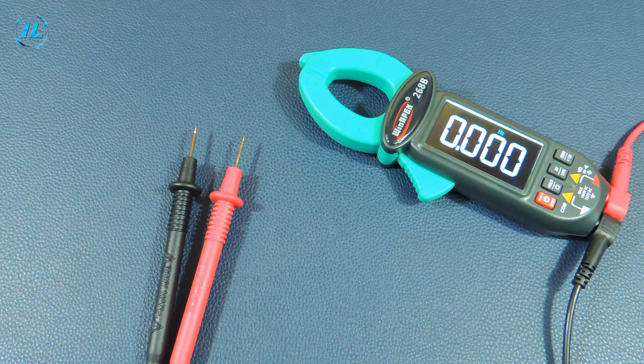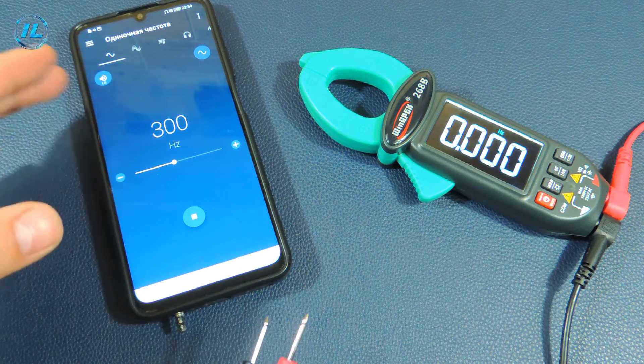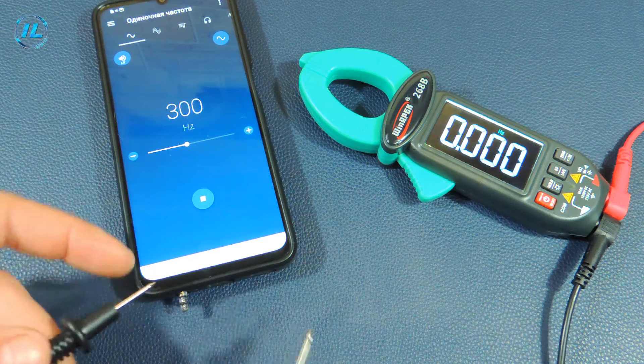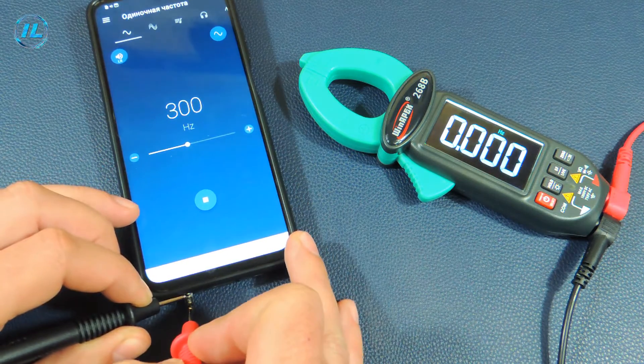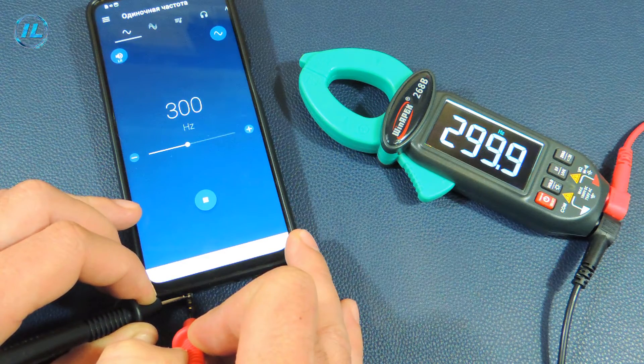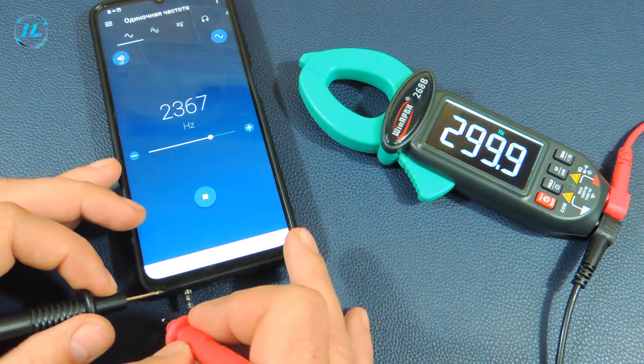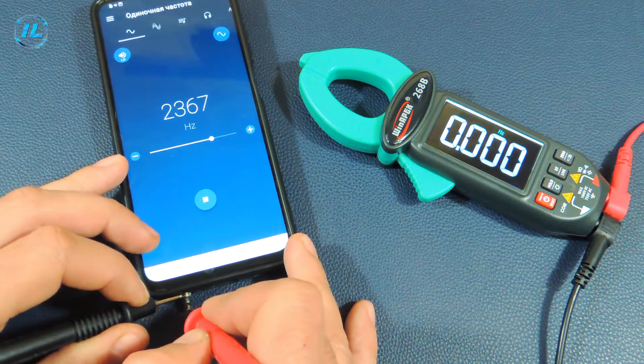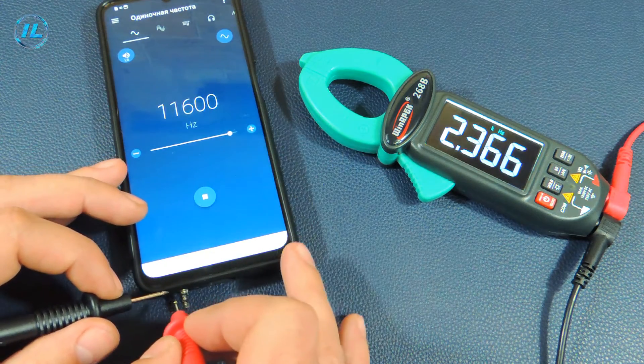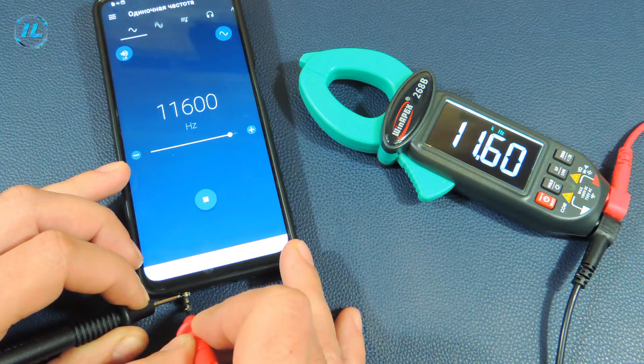The next mode is frequency measurement. To check, I opened the tone generator, and now we will see the compliance of the indicators. The frequency is 300 hertz. Exactly 300 hertz. 2367 hertz. That's right. 11 kilohertz. That's right.